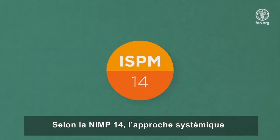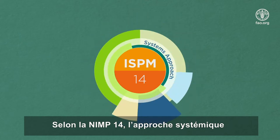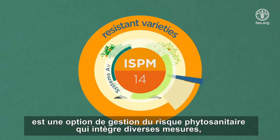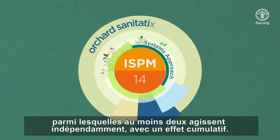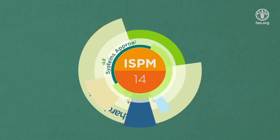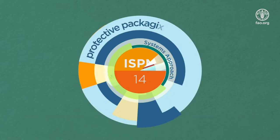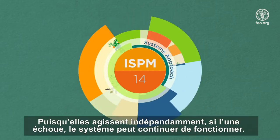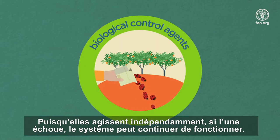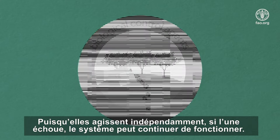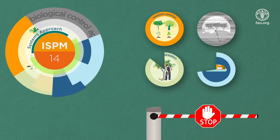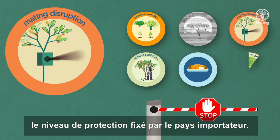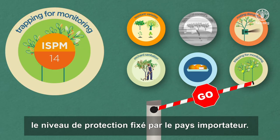ISPM 14 establishes the practice of systems approach, a pest risk management option that integrates different measures, at least two of which act independently with cumulative effect. Each of these measures reinforces the effectiveness of the system, and because they act independently, if one fails, the system can continue. Adjustments to the system can be made until it achieves the appropriate level of protection set by the importing country.